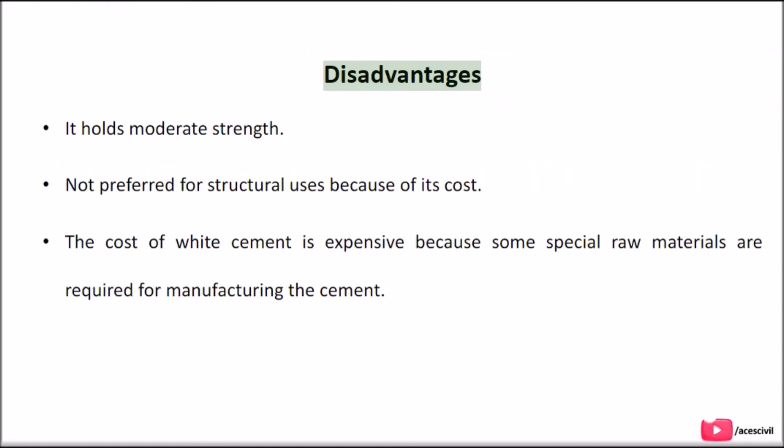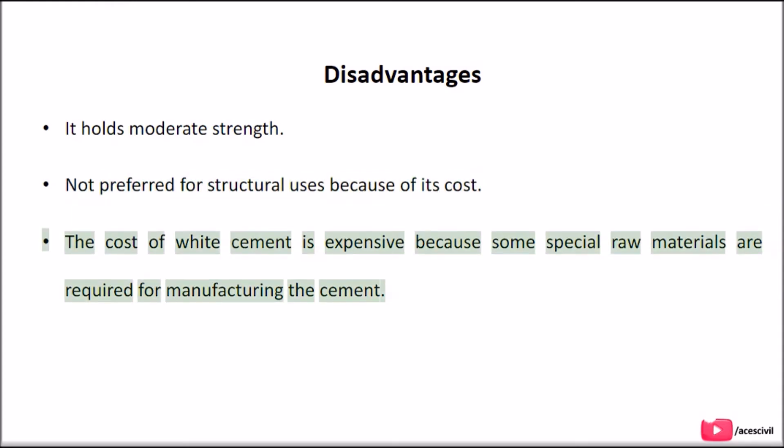Disadvantages: White cement holds moderate strength. It is not preferred for structural uses because of its cost. The cost of white cement is expensive because some special raw materials are required for manufacturing the cement.